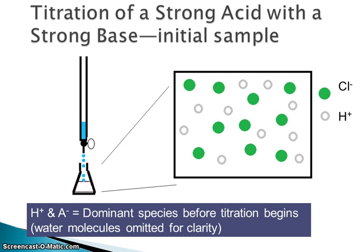When we look at the initial sample of our acid in the flask, this is a strong acid so it's completely dissociated. If the strong acid is HCl, for example, all the HCl molecules have dissociated into H⁺ ions and Cl⁻ ions. I've left out all the water molecules for clarity. There are 10 H⁺ and 10 Cl⁻ — 100% ionization, which is of course what we expect with a strong acid.